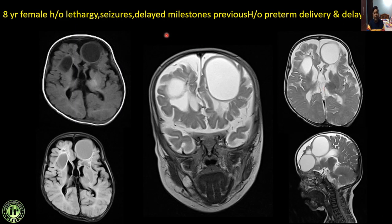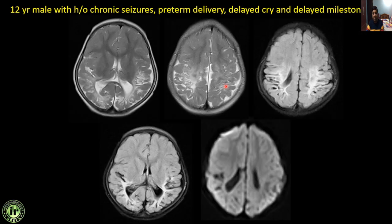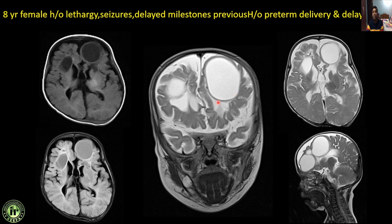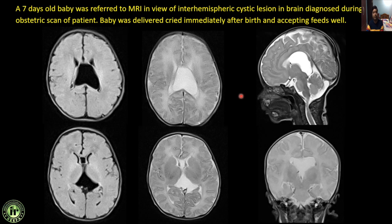Next case: an 8-year female with lethargy, seizures, delayed milestones, and history of preterm delivery and delayed cry. Multiple cystic foci scattered in the cerebral parenchyma are hypointense on T1, hyperintense on T2. There is associated mild corpus callosal agenesis and abnormal gray-white matter differentiation. This is a classical case of multicystic encephalomalacia — large cysts scattered in the cerebral parenchyma with abnormal gray matter differentiation, associated with corpus callosal agenesis.